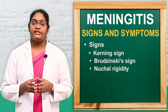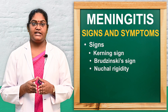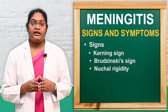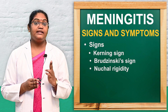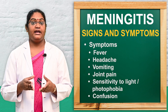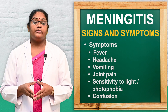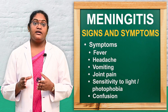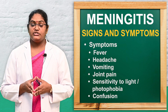Next we will discuss the signs and symptoms or clinical manifestations of meningitis. The main signs of meningitis are Kernig's sign, Brudzinski's sign, and nuchal rigidity. Other symptoms include fever, headache, vomiting, joint pain, and photophobia or sensitivity to light.